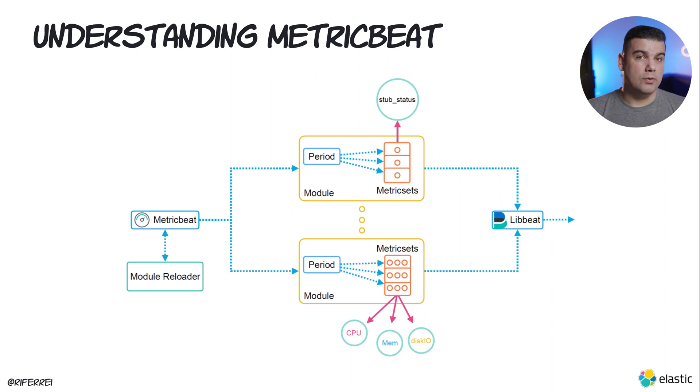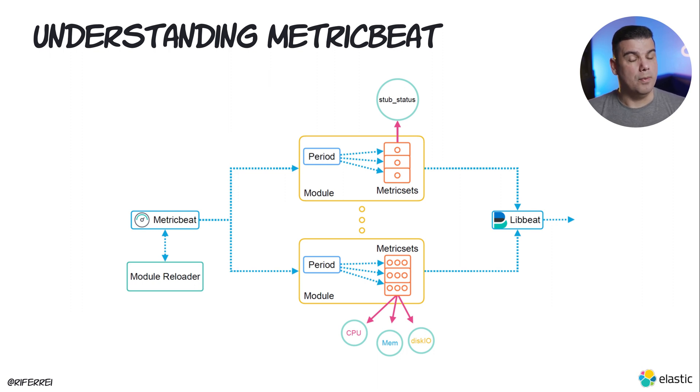Metricbeat is not necessarily only used for shipping data to Elasticsearch — Elasticsearch is treated as one of the outputs. You can use Metricbeat along with different types of outputs, for example a Kafka output. Things are going to be simpler to understand in the next session where I'm going to show you how to download, install, and use Metricbeat, and everything I've just described about modules and metric sets will hopefully be simple to understand.